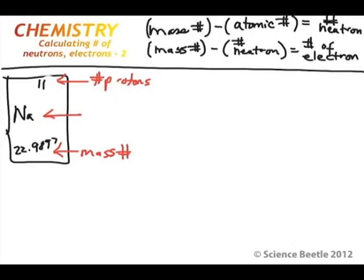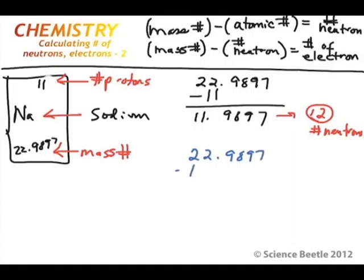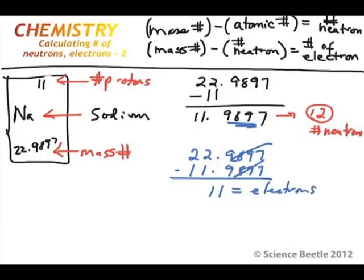The next element has the symbol Na, which represents sodium. We take the mass number 22.9897 and subtract 11 from it. The result is 11.9897. We round this up to 12, which becomes our number of neutrons. Then to calculate the electrons, I take 22.9897 and subtract 11.9897. These cancel out and I'm left with 11. So we'll have 11 electrons in this structure.